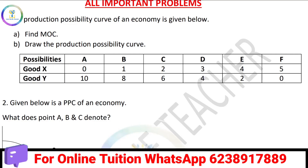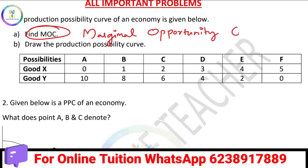In the first chapter, we will find MOC. What is MOC? MOC is called Marginal Opportunity Cost. When you choose between good X and good Y, how much of good Y you sacrifice to get more of good X — that is MOC.